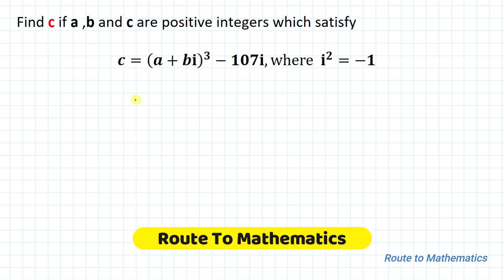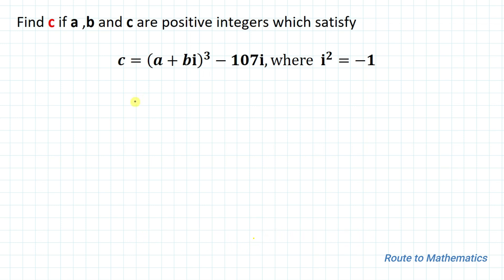Hello everyone, welcome to Root to Mathematics. In this video we're going to solve one question on complex numbers. The given question is: find c if a, b, c are positive integers satisfying the equation c equals a plus bi whole cube minus 107i, where i squared equals minus 1. We are asked to find the value of c.